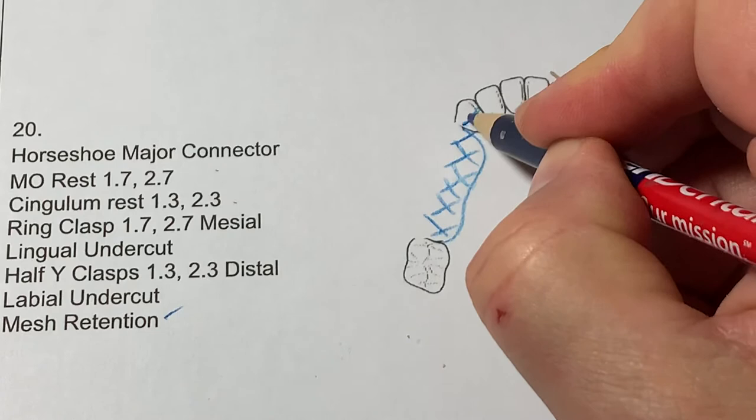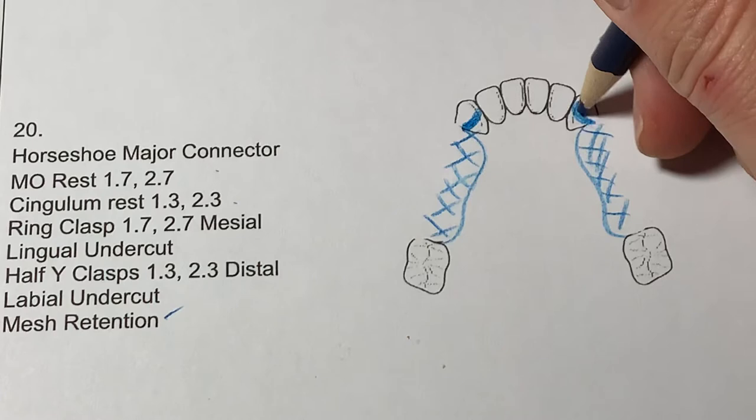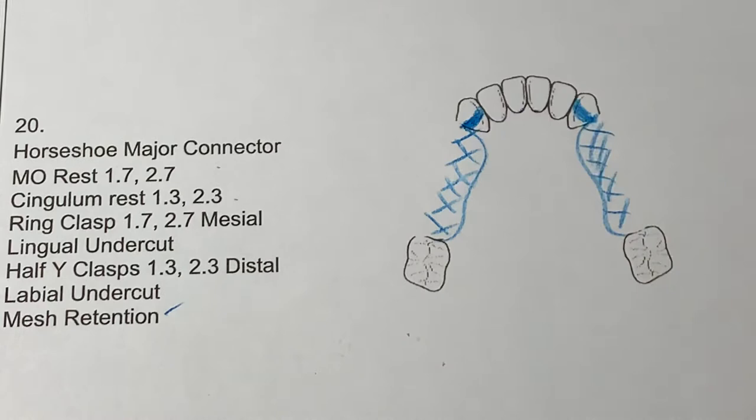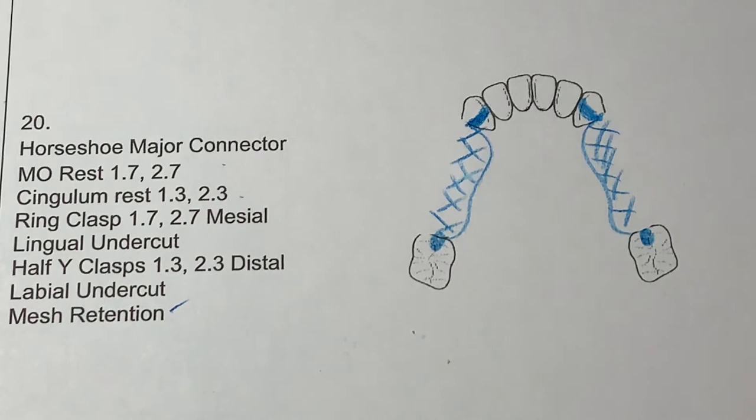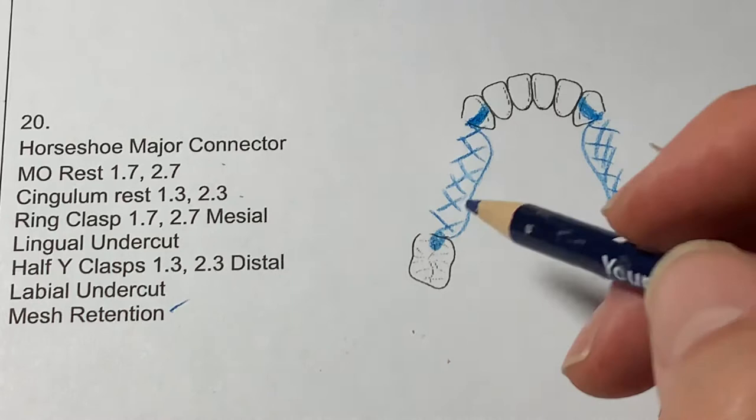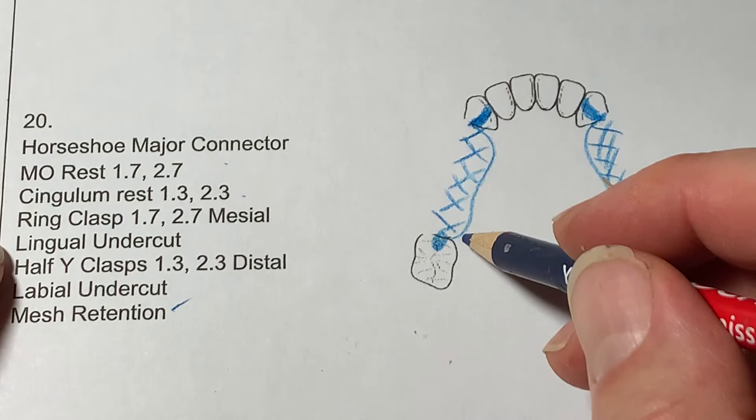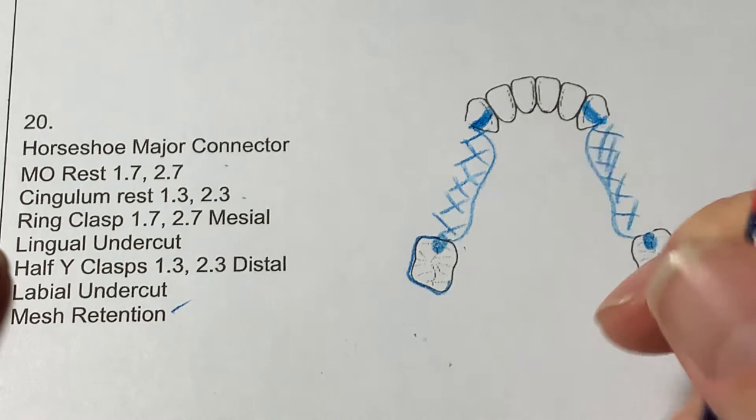Cingulum rest on 1-3. Cingulum rest on 2-3. Your drawings in the future will be very clear. Everyone should be getting very close to 100%, if not all of us 100%, if we practice diligently. And maybe a few hairs we need to clean up on. Mesioclusal rest. Ring clasp on the sevens engaging the mesial lingual undercut.